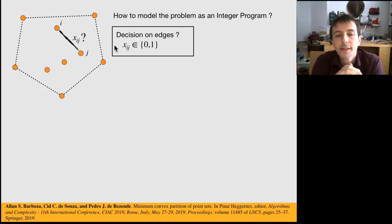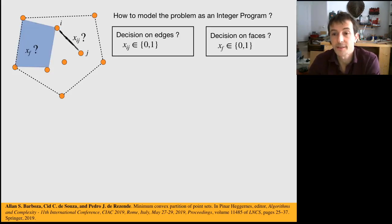What we did here is that we, as opposed to edges, we considered faces. So one variable for each possible convex face.